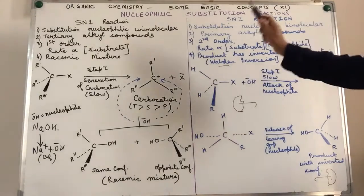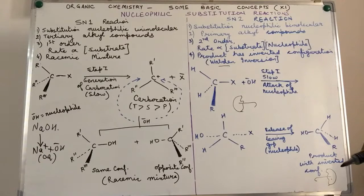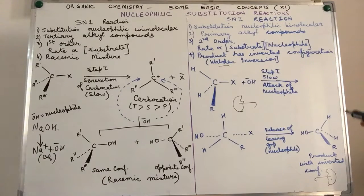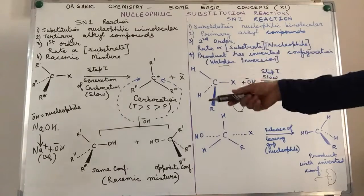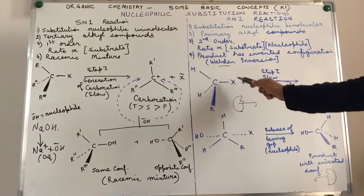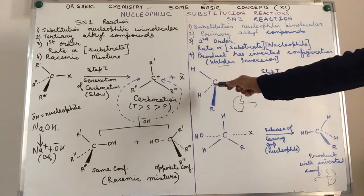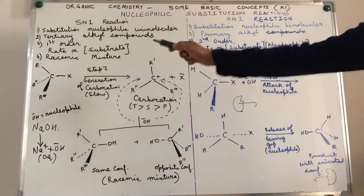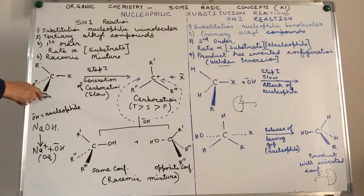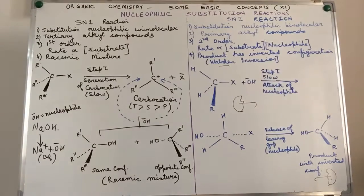What about secondary alkyl compounds? For secondary compounds, it will depend upon the reaction conditions. Since they are in between primary and tertiary, they can undergo either SN1 or SN2 depending on the substrate and nucleophile involved. As for why tertiary alkyl halides do not undergo SN2: in tertiary alkyl halides there are bulky groups, which create steric hindrance, not allowing the incoming nucleophile to attach itself to the central carbon atom.